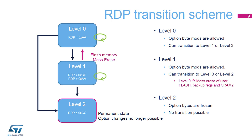Let's look at the transitions possible between each readout protection level. STM32L4 MCUs have three RDP levels. Level 0 means there is no memory protection and option bytes can be modified. From Level 0, the device can move to Level 1 or Level 2. Level 1 ensures memory protection while keeping debug access enabled. From Level 1, the device can move to Level 0 or Level 2; regression to Level 0 will cause a flash memory mass erase. Level 2 ensures the same memory protection as Level 1 but completely disables JTAG-SWD debug access. Level 2 is a permanent state, and moving to another RDP level is not possible.